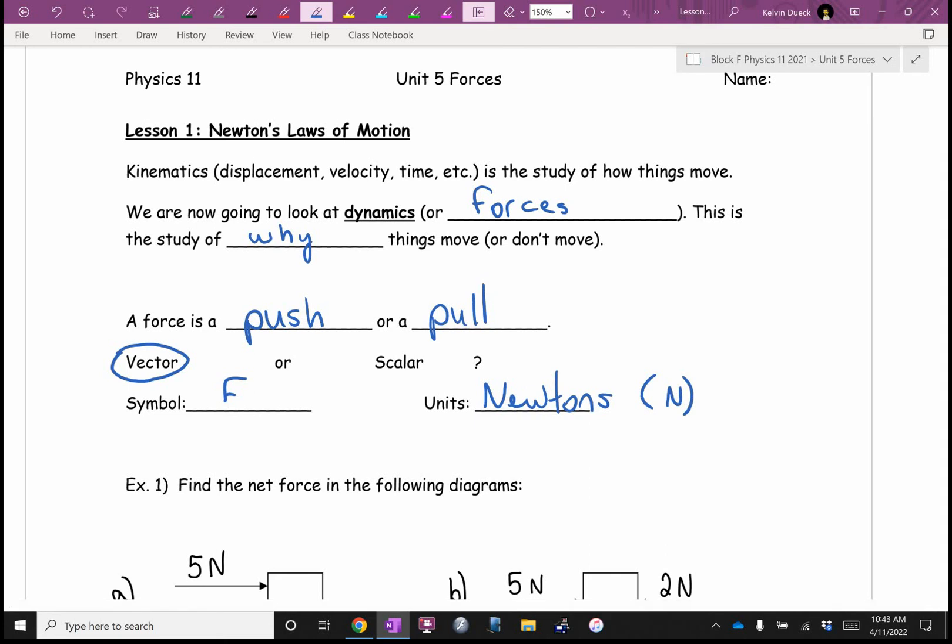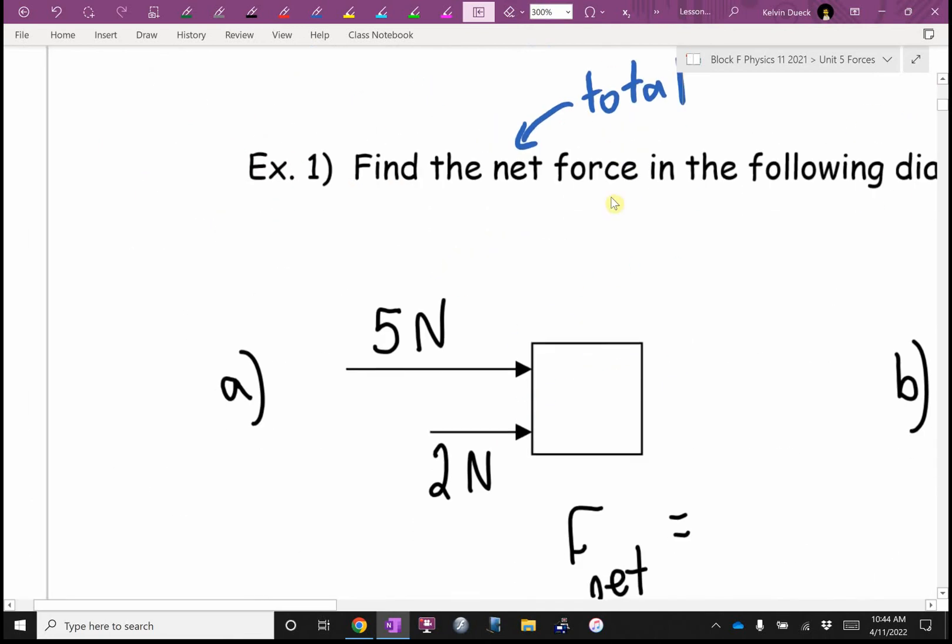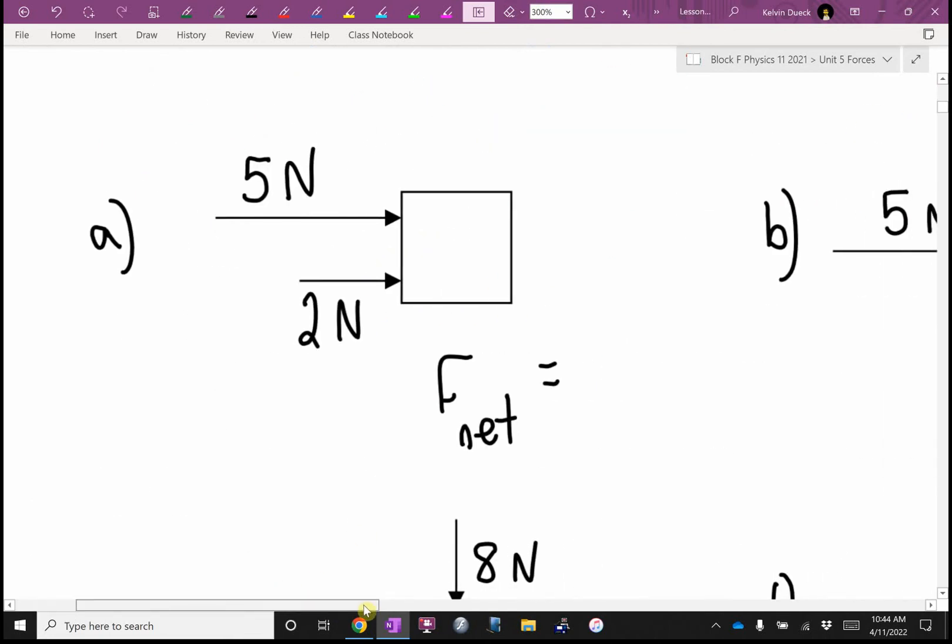One of the things we're going to talk about very often is the net force. What's the net force? That is the total, the sum of all the forces. So let me give you an example here. It says find the net force in the following diagrams. And I'm going to say magnitude and direction. Let's use a direction of north, south. Can you all draw a little compass rose right here above the letter A like that?